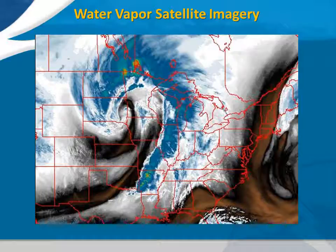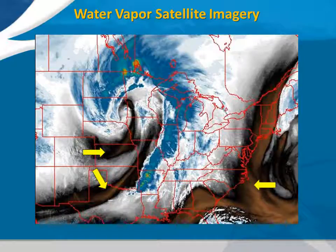This type of imagery utilizes a wavelength sensitive to the content of water vapor, or moisture, in the atmosphere. Black and brown areas, some of which are identified by the yellow arrows here, indicate areas where little or no moisture is present, while all other colors indicate that there is some water vapor present in the mid and upper levels of the atmosphere.